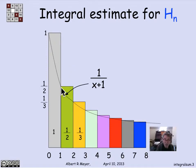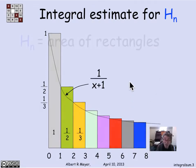When x is 1, I'm at 1/2, the height of the second rectangle, and so on. So 1/(x+1) is a curve that is strictly below the boundaries of all these rectangles. That means that the area under 1/(x+1) going from 0 to n is a lower bound on H_n, because it's a lower bound on the area of the rectangles.